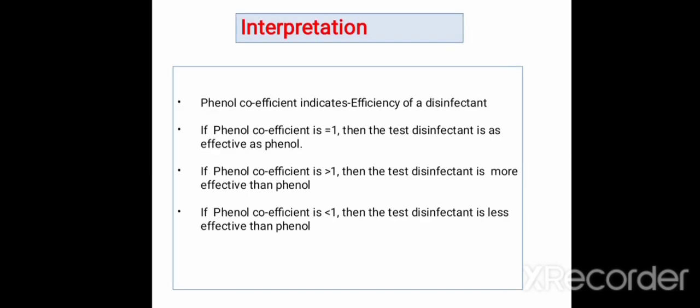After calculating the phenol coefficient ratio we get a certain value, and from that value we can interpret the result. If the phenol coefficient ratio is 1, it indicates the test disinfectant is as effective as phenol. If the phenol coefficient ratio is more than 1, the test disinfectant is more effective than phenol. If it is less than 1, the test disinfectant is less effective than phenol.